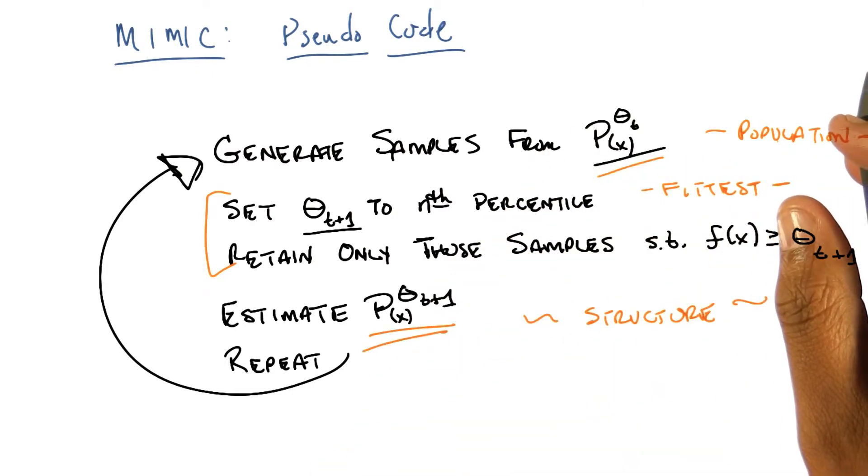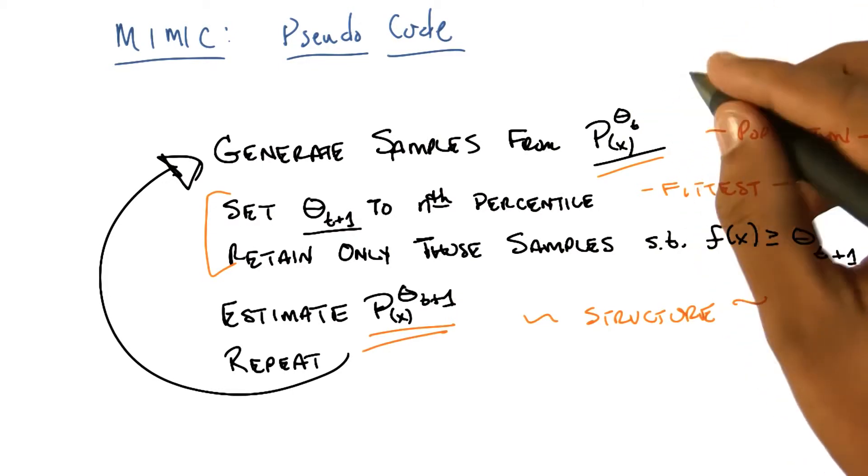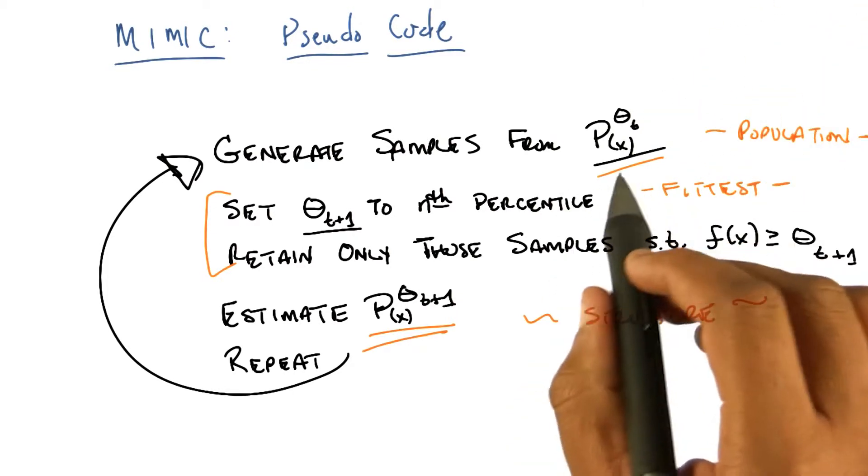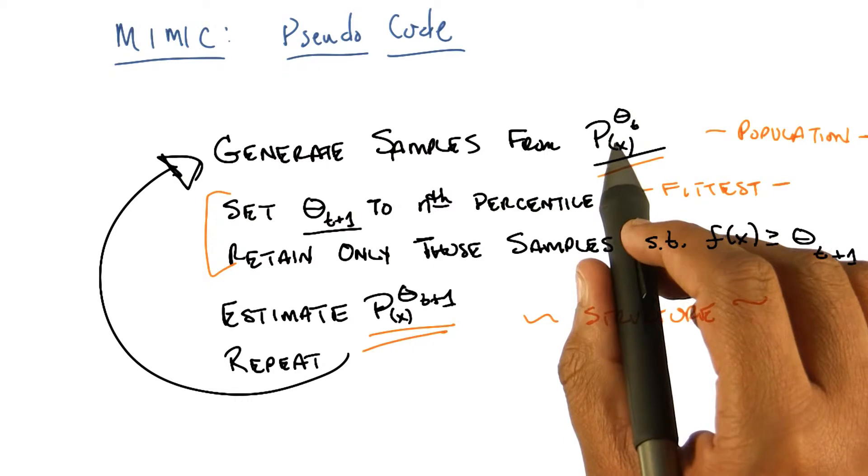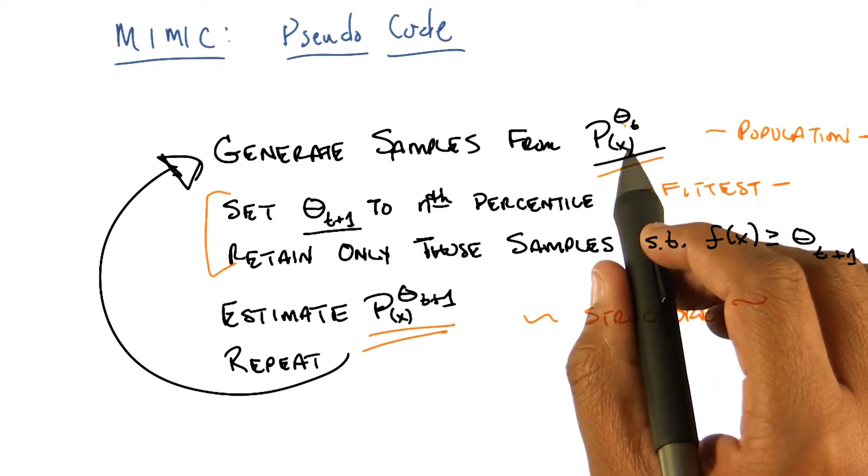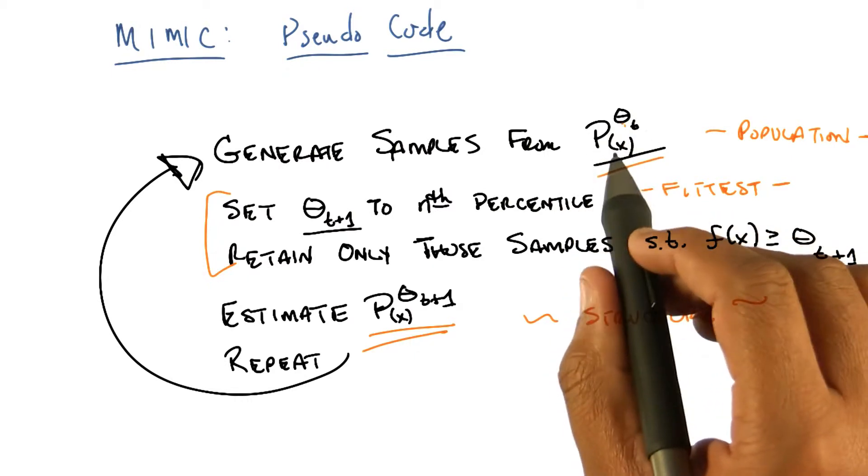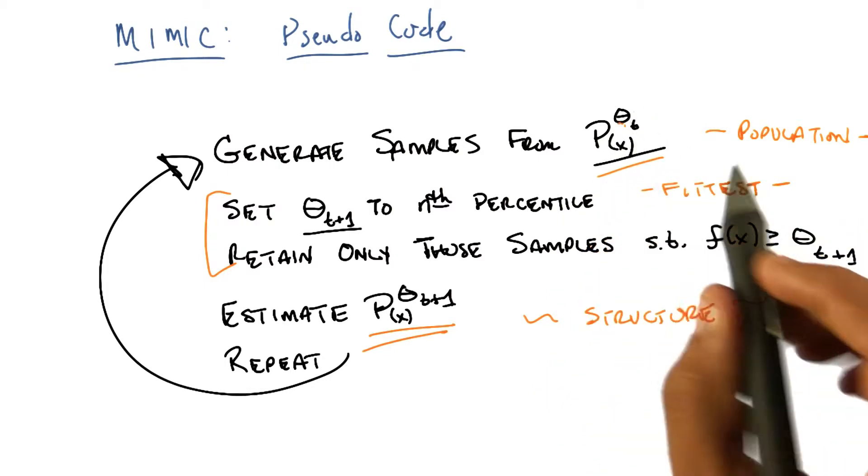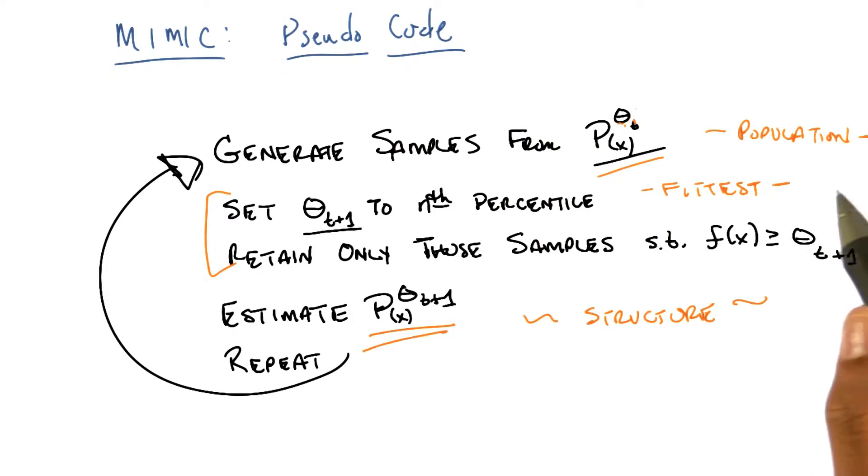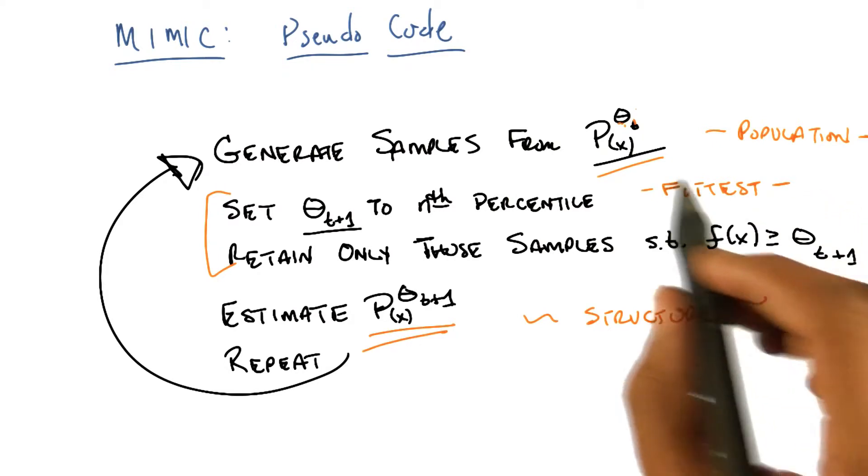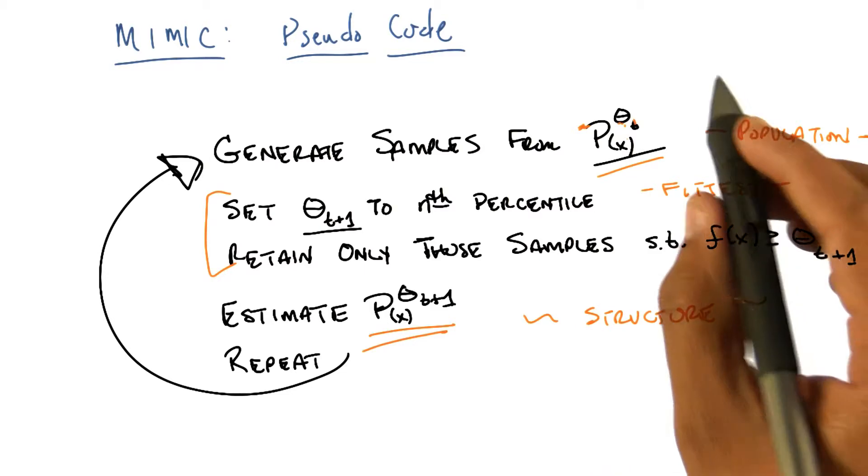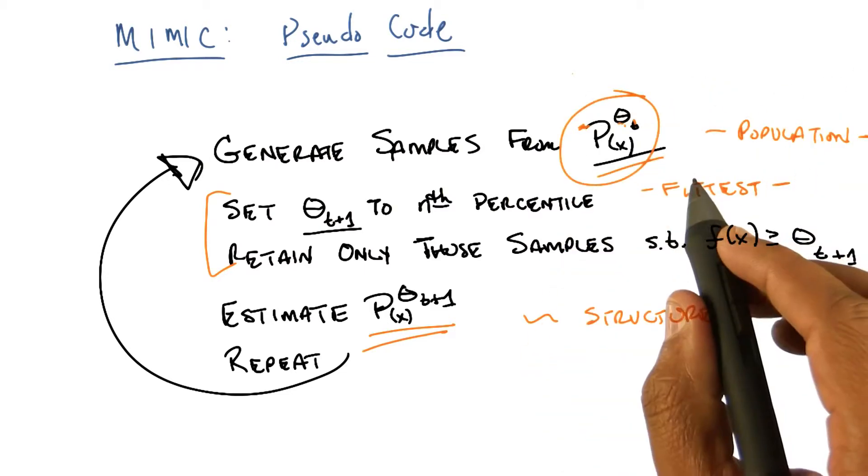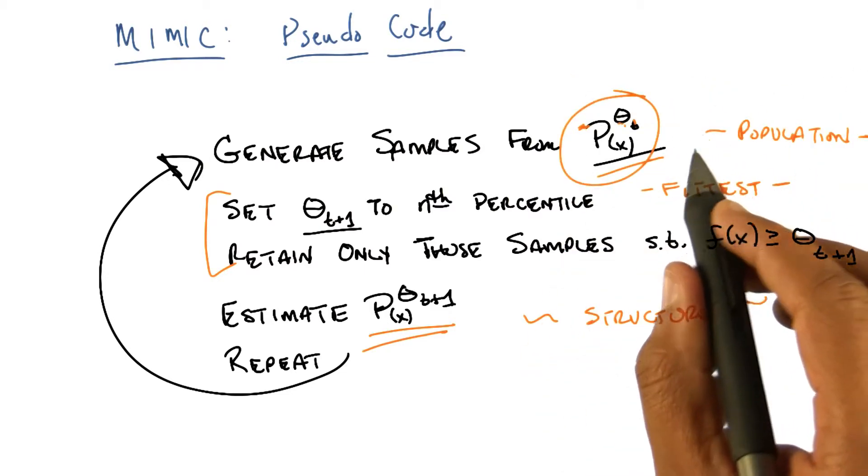I'm not yet connecting it with theta in the sense of the previous slide. Ah, so theta is our threshold, right? So basically we have some distribution. Now remember, what is p superscript theta? It is a probability distribution that is uniform over all points that have a fitness value that is greater than or equal to theta, right? So I have some distribution here. If I generate samples from that distribution, then what this means is I'm going to be generating all the points whose fitness is at least as good as theta.